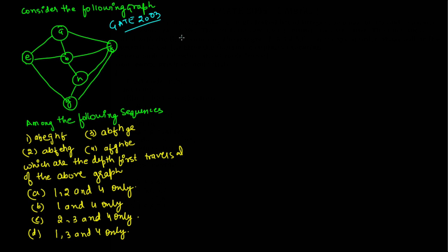This question was asked in GATE 2003. They have given us a graph and four sequences, which are depth first traversals of the graph. We have to determine which sequences are valid. In this graph, we have vertex A, vertex B, vertex F, and vertex E.